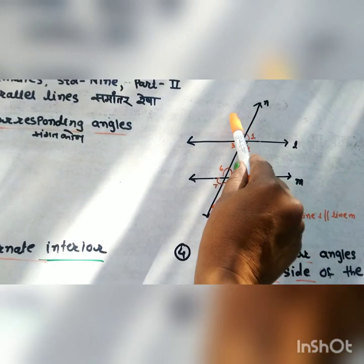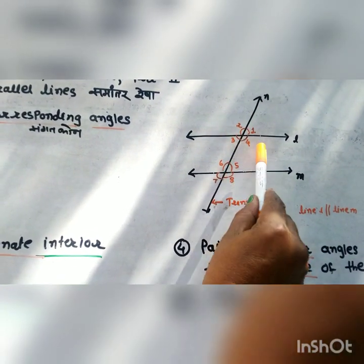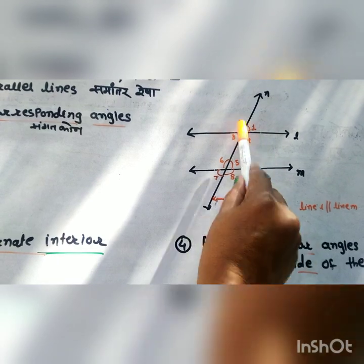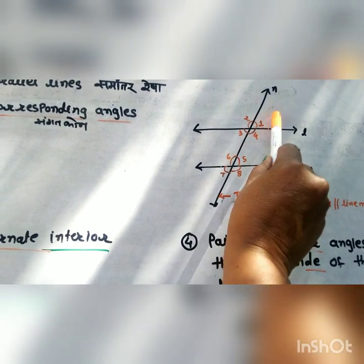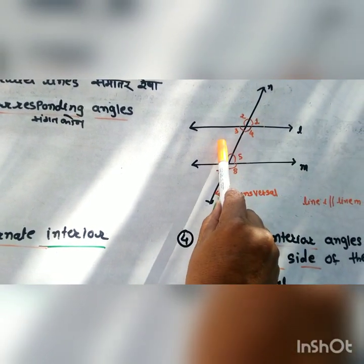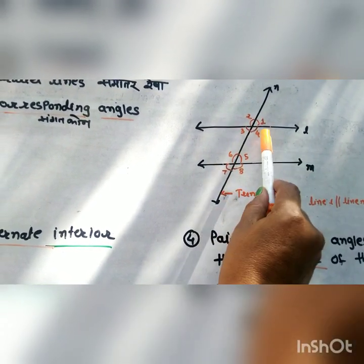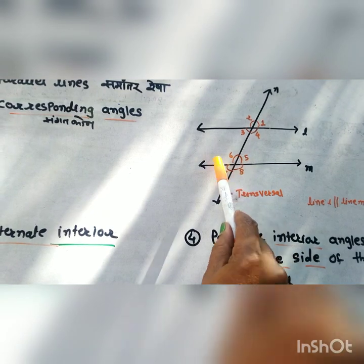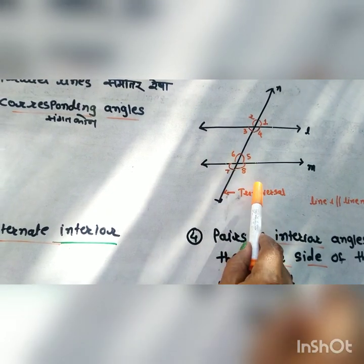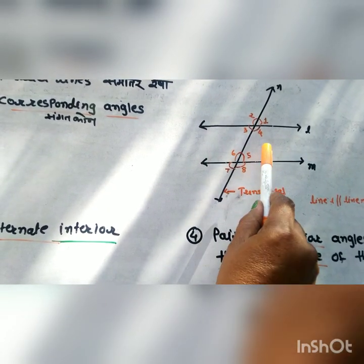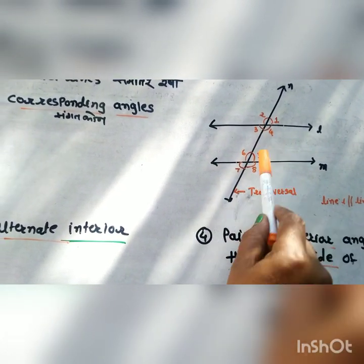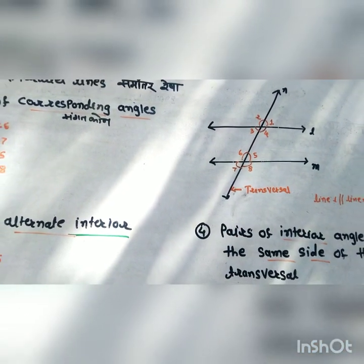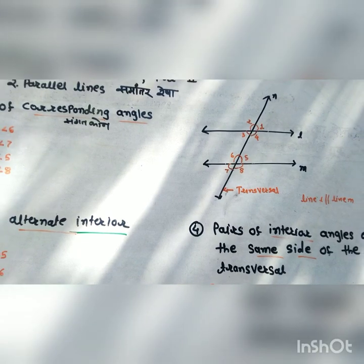Opposite angles: angle 2 and angle 4 are opposite angles and congruent. Angle 1 and angle 3 are also opposite angles and congruent. Angle 6 and angle 8 are equal. Similarly, angle 7 and angle 5 are also congruent.